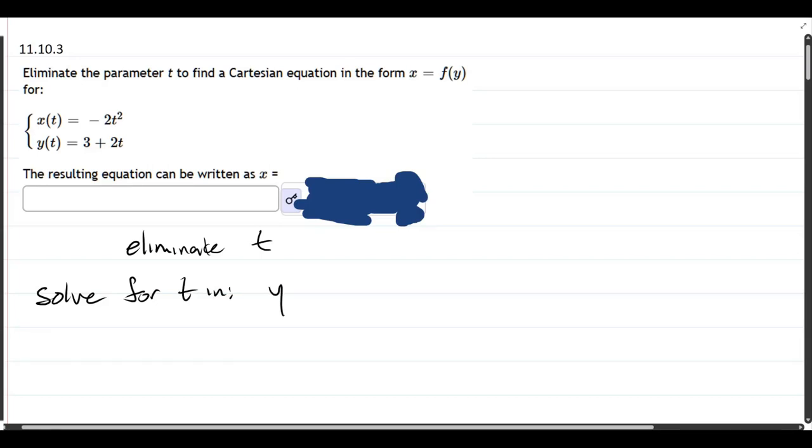Now, I'm not going to write the y of t. I'm just going to write the y. The of t notation just tells you that y depends on t, and y is 3 plus 2t.